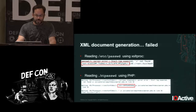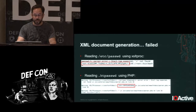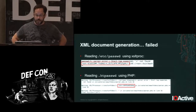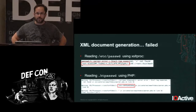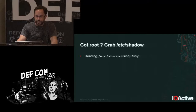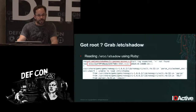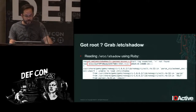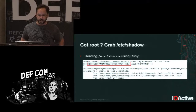If the processor is running as root, you could also access /etc/shadow. Using Ruby to retrieve that file will show all the expected errors, but also the hashed password for root right in the output.